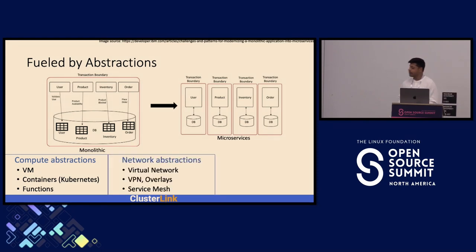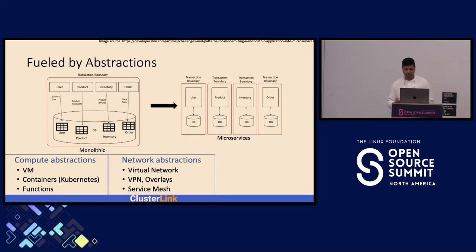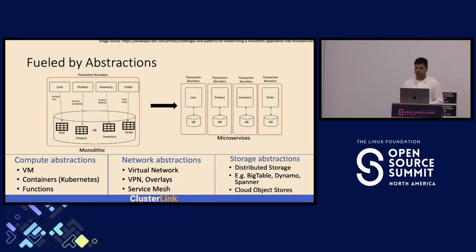Next, network abstractions to enable connectivity between workloads deployed in a cluster using virtual network overlays at L2, L3, and all the way up to L7 using service meshes. And finally, storage abstractions to enable distributed storage across systems with distributed databases like BigTable, Spanner, and cloud object storages.